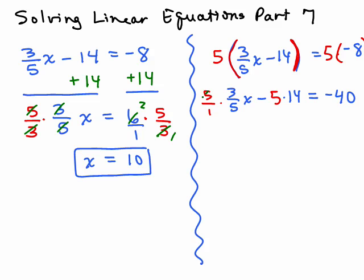So on the left here you can cancel the 5s and that gives you 3x minus 70 equals negative 40. Now some people could do this without showing all the steps and get 3x minus 70, that's fine. In other words, if you can do the distributive property and cancel in your head, that's fine. Just make sure that you're accurate.